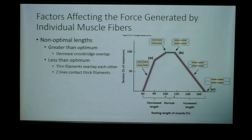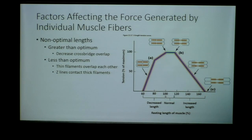Let's look at greater than and less than optimal length — the two conditions that will not generate as much force as the optimal length. A graph compares percent of maximum force versus the length of the sarcomere. Starting the sarcomere very contracted, with Z lines very close together, means crossbridge cycling will not yield the maximum amount of interaction because we're already so shrunken in.